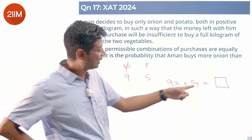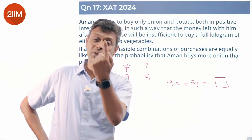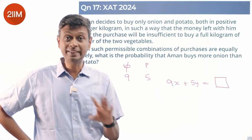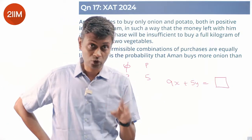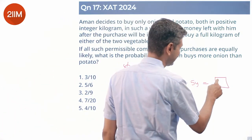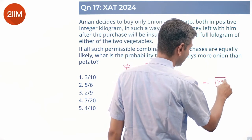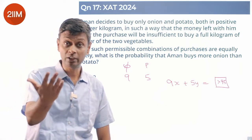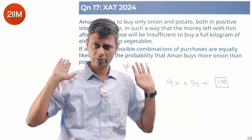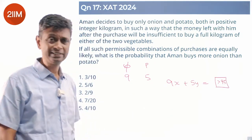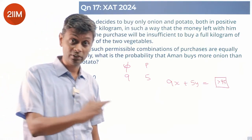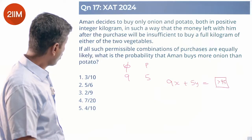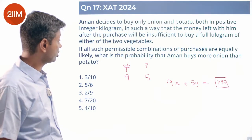If the remaining money were 95 or above he could buy one more kilogram of potato; at 90 he could buy onion too. So the total spent — 9x+5y — must be greater than 95, meaning it could be 96, 97, 98, 99, or even 100 (spending everything). It cannot be 95 or less, since then he could still buy one more kilogram.